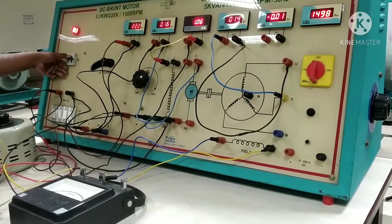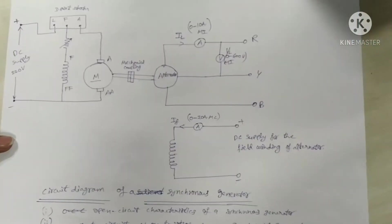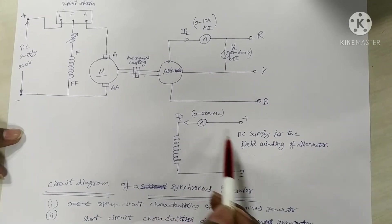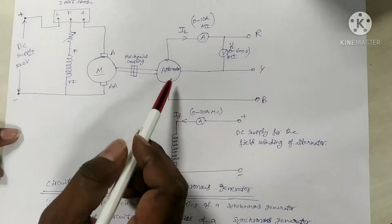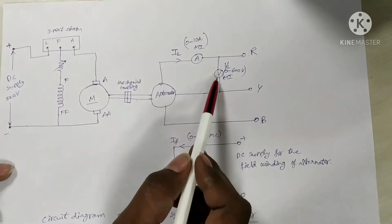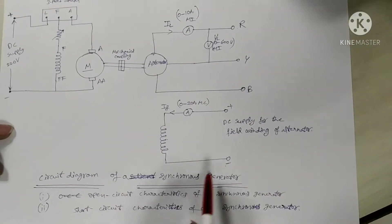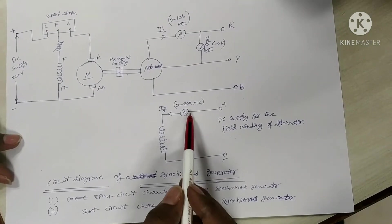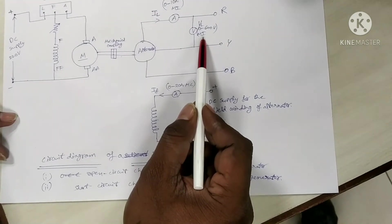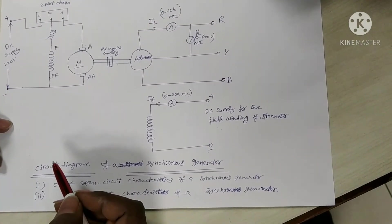Now we are going to reduce the auto transformer output voltage to 0 volts and then switch off the DC supply. For determining the open circuit characteristics of a synchronous generator, we varied the field winding current by adjusting the single phase variac, kept the alternator prime mover speed constant by adjusting the external field winding resistance, and noted down the line-to-line voltage of the stator winding terminals of the alternator. We varied the field winding current until the voltage reached 120% of the rated line-to-line voltage, which is 415 × 1.2 = 498 volts.